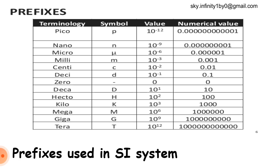The first one being pico for 10 raised to minus 12, nano for 10 raised to minus 9, micro for 10 raised to minus 6, milli for 10 raised to minus 3, centi for 10 raised to minus 2, and deci for 10 raised to minus 1.